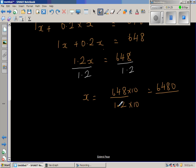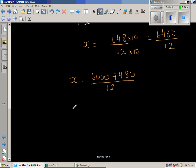If you multiply this by 10, you get 12. So this is 6000 plus 480 divided by 12. Therefore x is 6000 over 12 plus 480 over 12. 12 goes into 60 five times, giving 500. And 12 times 4 is 48.